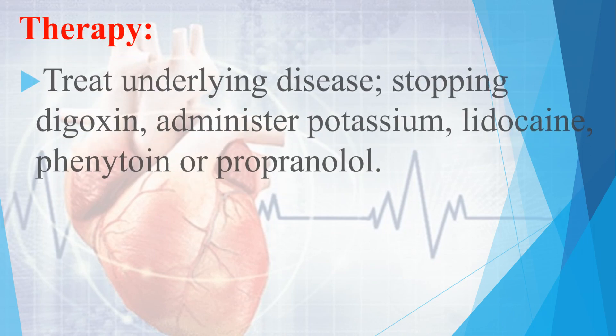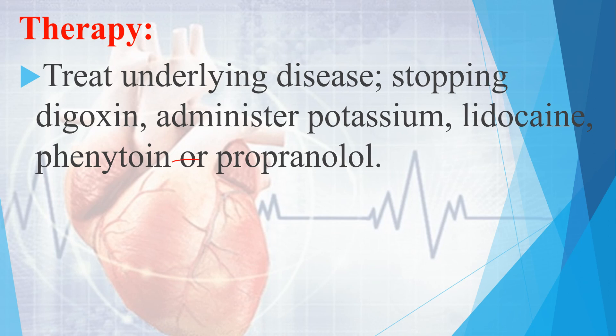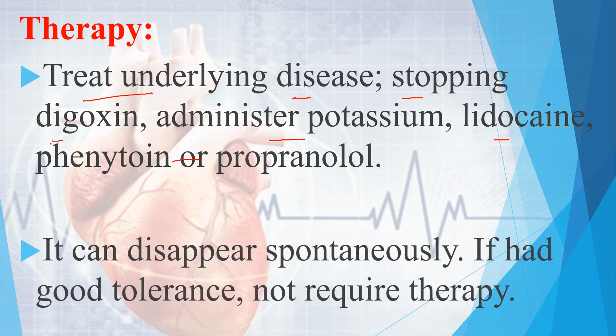Regarding treatment, treat the underlying disease — find out the exact root cause and treat it. If it is due to Digoxin toxicity, stop Digoxin. Administer potassium if due to hypokalemia, then administer Lidocaine (an antiarrhythmic), Phenytoin, and Propranolol — a beta blocker. It can also disappear spontaneously; if the patient has good tolerance, no treatment is needed.